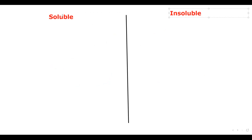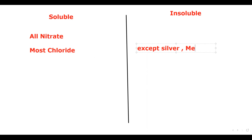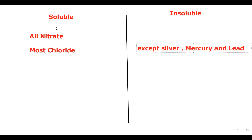From the table: all nitrates are soluble — any salt having NO3 is soluble. Most chlorides are also soluble, except three: silver chloride, mercury chloride, and lead chloride. These three chlorides are insoluble and do not dissolve in water.